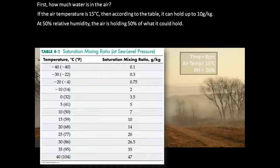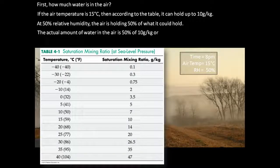At 50 percent relative humidity, the air is holding 50 percent of what it could hold. The actual amount of water in the air is 50 percent of 10 grams per kilogram, or 0.5 times 10 grams per kilogram, which comes out to be 5 grams of water per kilogram of air.